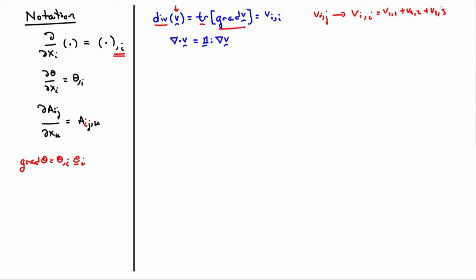Alternate notations people sometimes use for divergence: they'll use the nabla symbol with a dot, so nabla dot v, or the identity double contracted with the gradient of v. These are all alternate notations you may encounter, but they all mean the divergence of v, which is simply the sum of the derivatives of the components with respect to the corresponding coordinate directions.